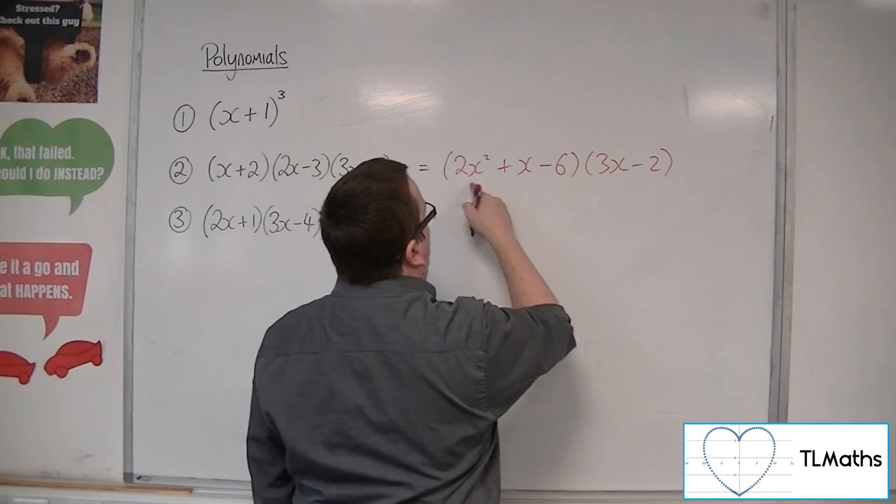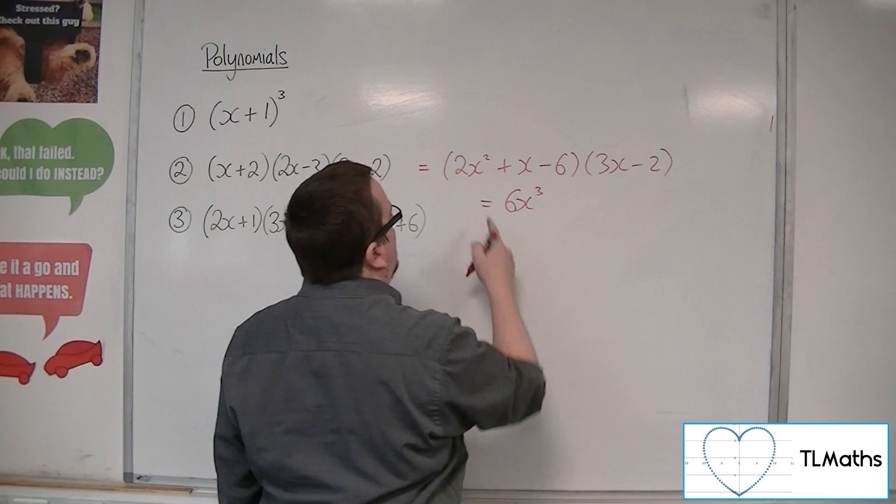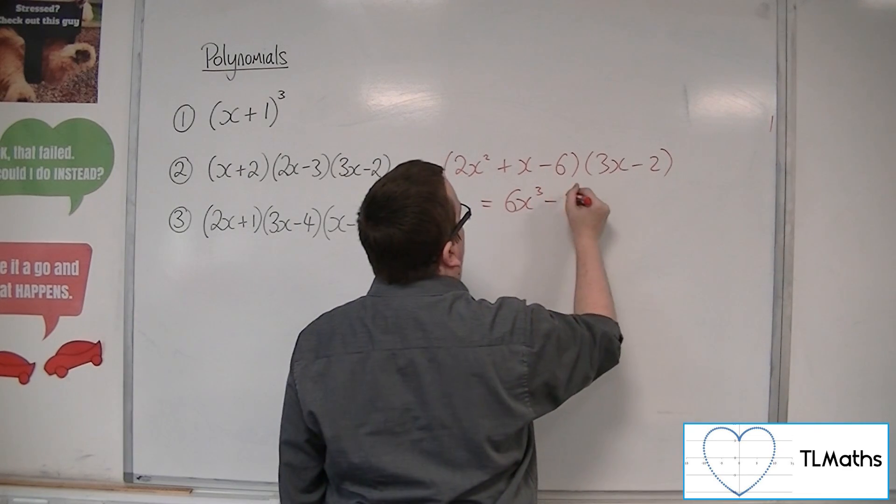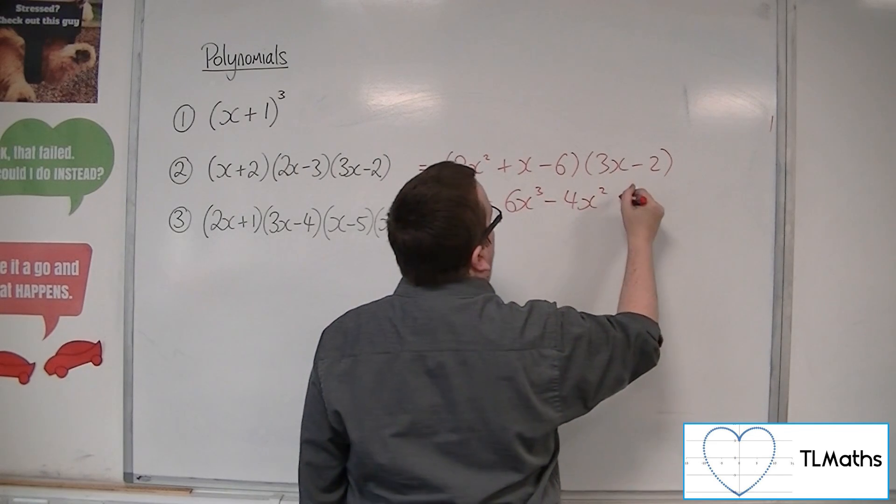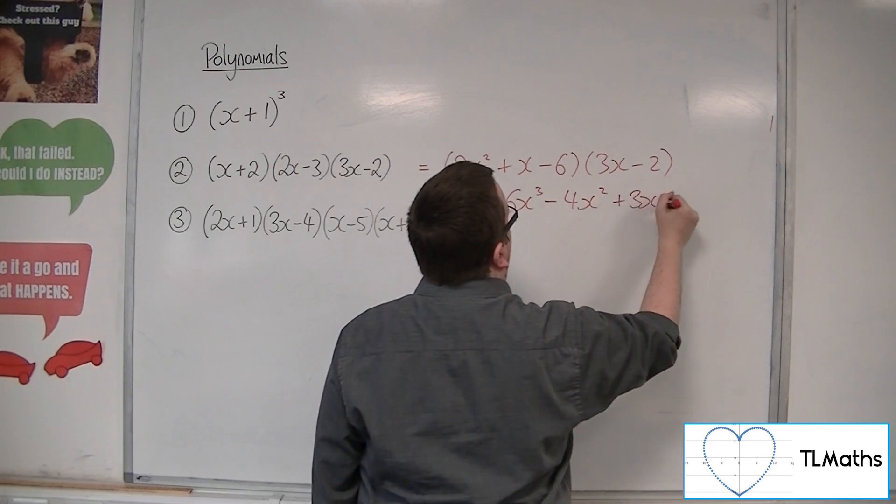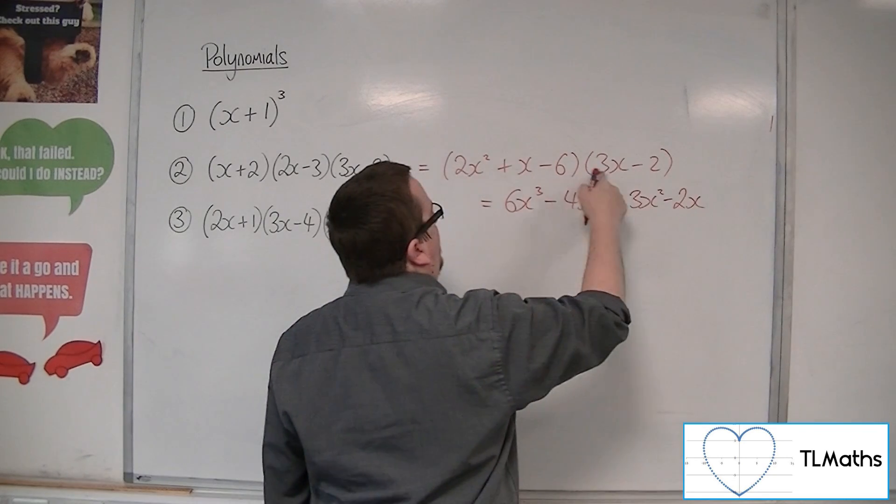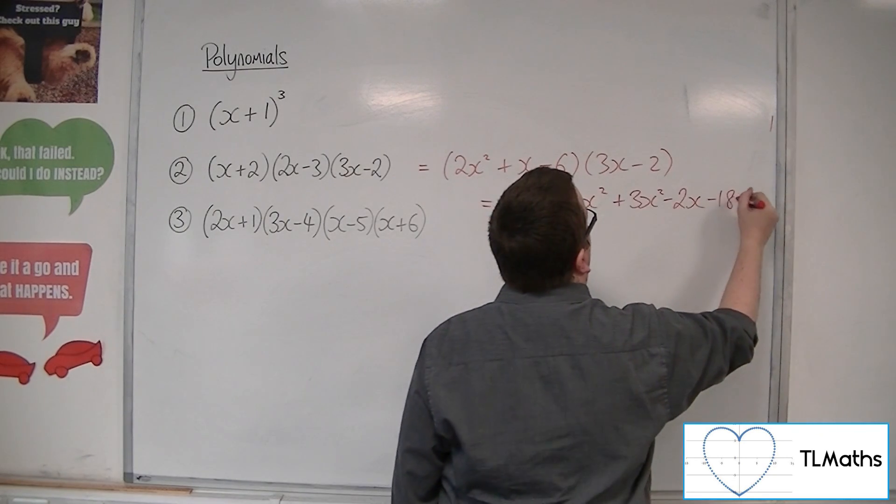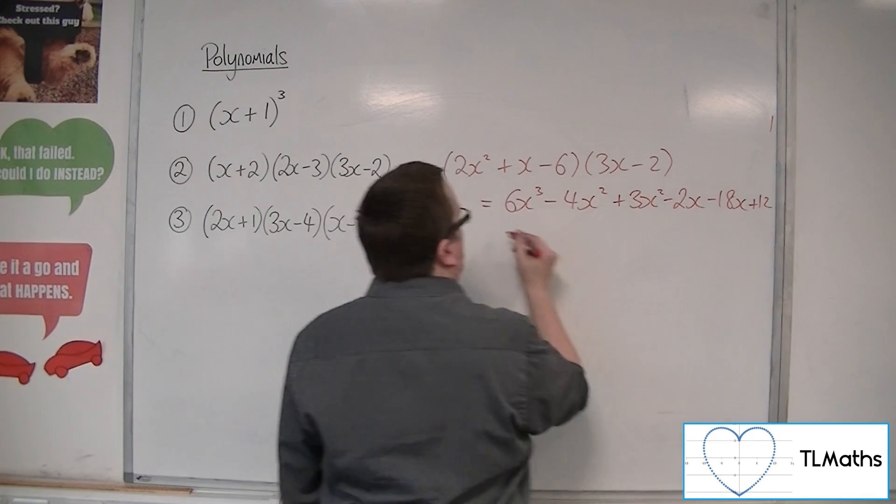So 2x² times 3x gets me 6x³, 2x² times -2, so -4x², x times 3x makes 3x², x times -2, so -2x, -6 times 3x is -18x, and -6 times -2 is +12.